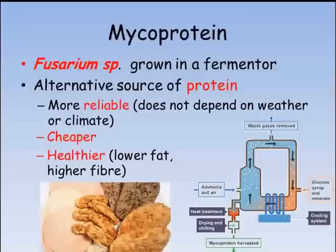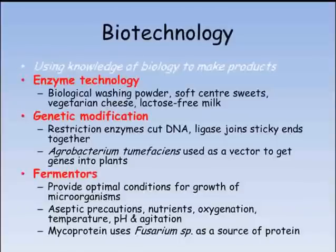So, biotechnology is all about using our knowledge of biology to make products. Enzyme technology produces biological washing powders, soft-center sweets, vegetarian cheese, and lactose-free milk. Genes can be added to bacteria using restriction enzymes to cut out the target gene and also the plasmid of a bacteria, producing sticky ends which are joined together using ligase. Agrobacterium is used as a vector when we want to get a gene into a plant, for example the BT toxin produced by Bacillus thuringiensis.